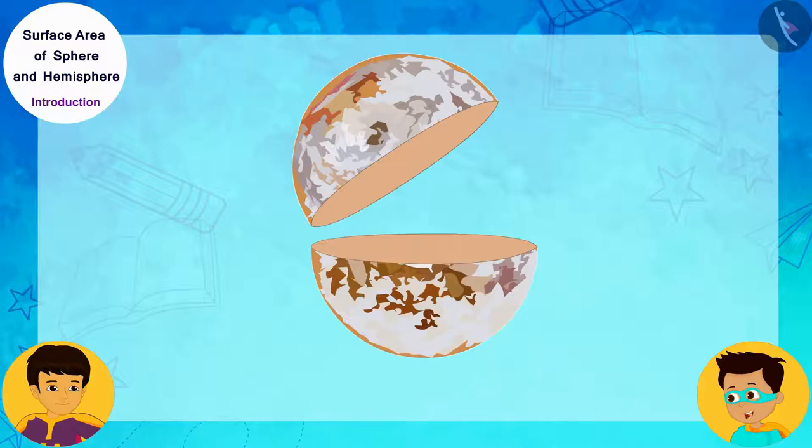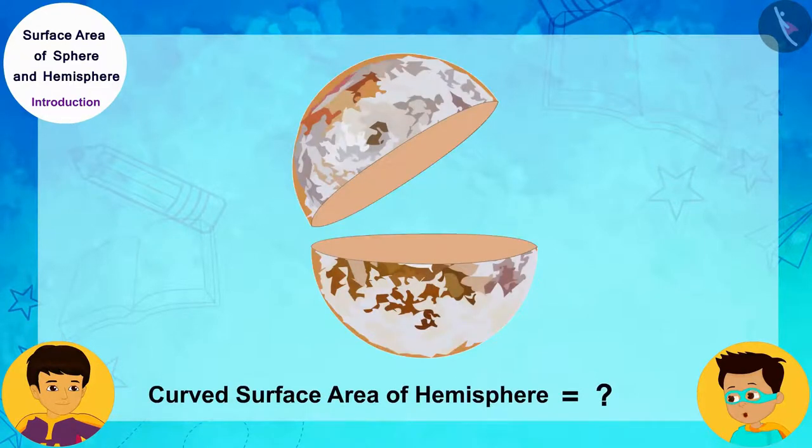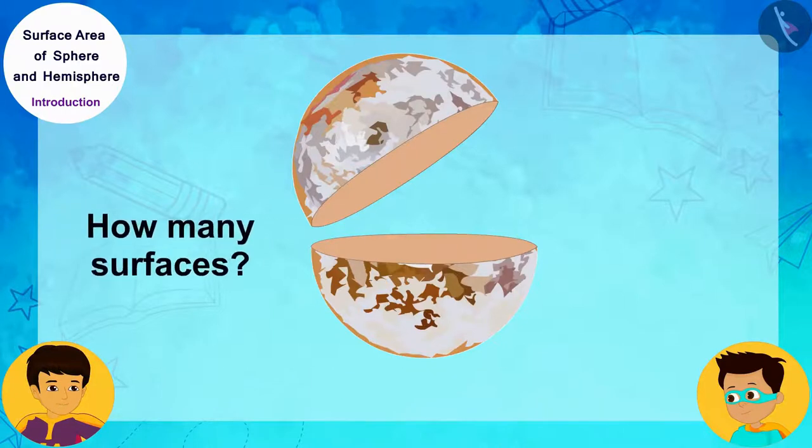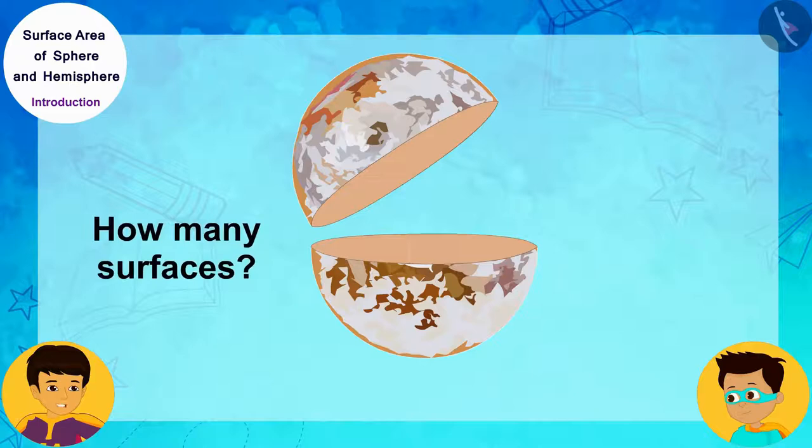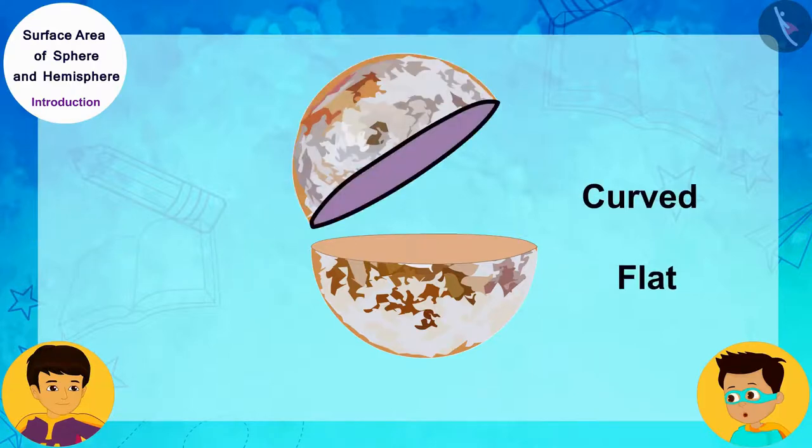Now, what will be the formula for the surface area of this hemisphere? I will tell you. First, you tell me how many surfaces are there in this hemisphere? Two. One is curved and the other is flat.